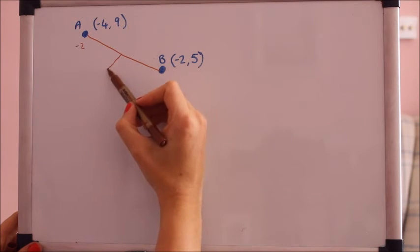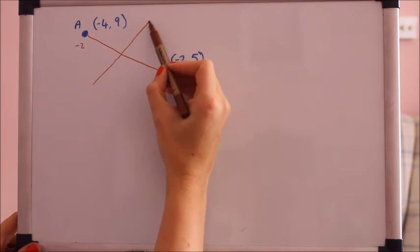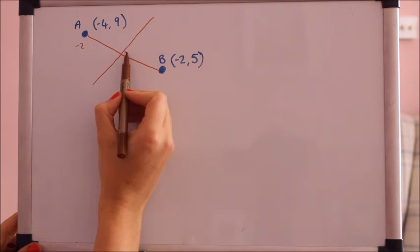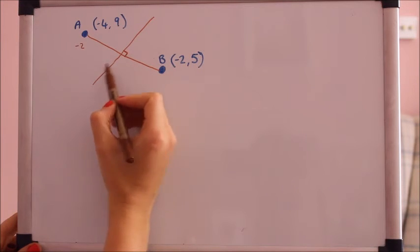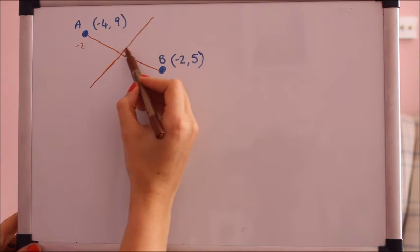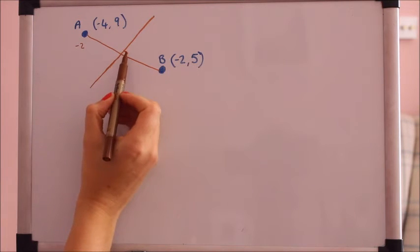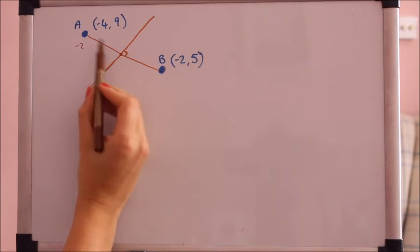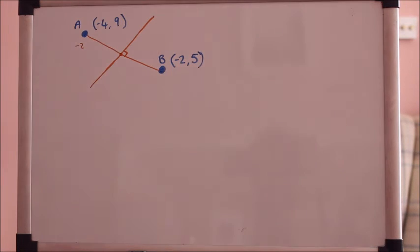Perpendicular is at 90 degrees to that, probably not a very good drawing but that should be at 90 degrees. So the perpendicular bisector will be running that way and it's called bisector because it cuts this line in half. Anything with the word bi in it is cutting into two pieces.